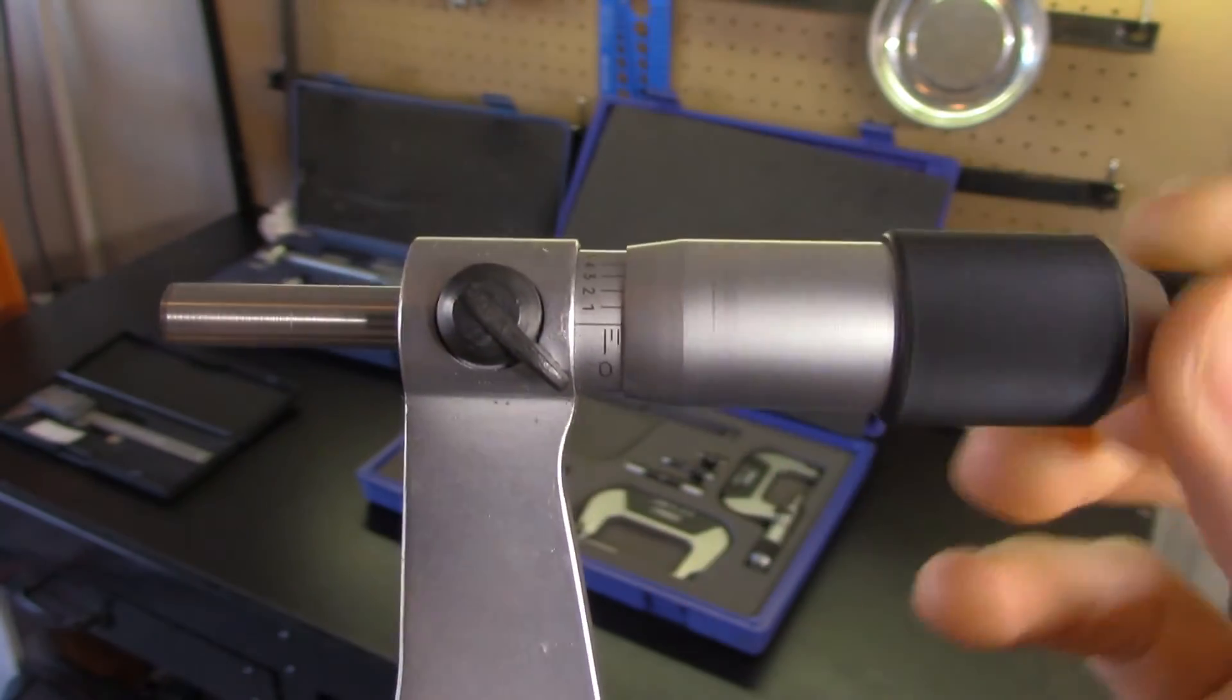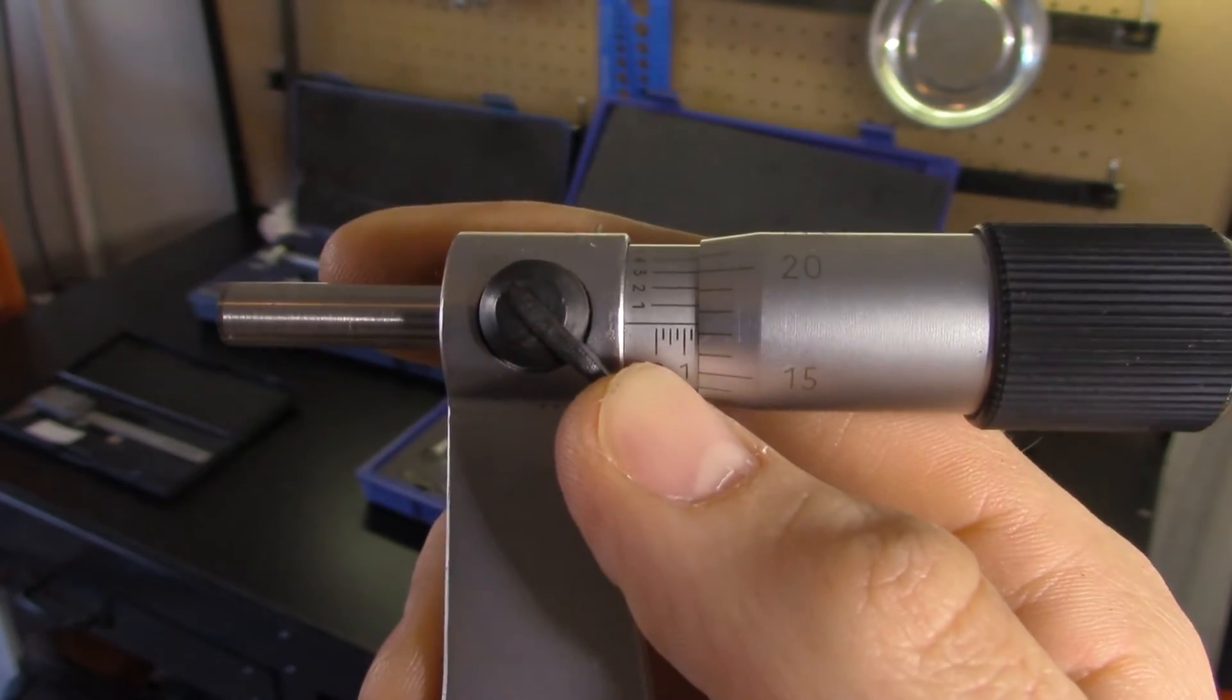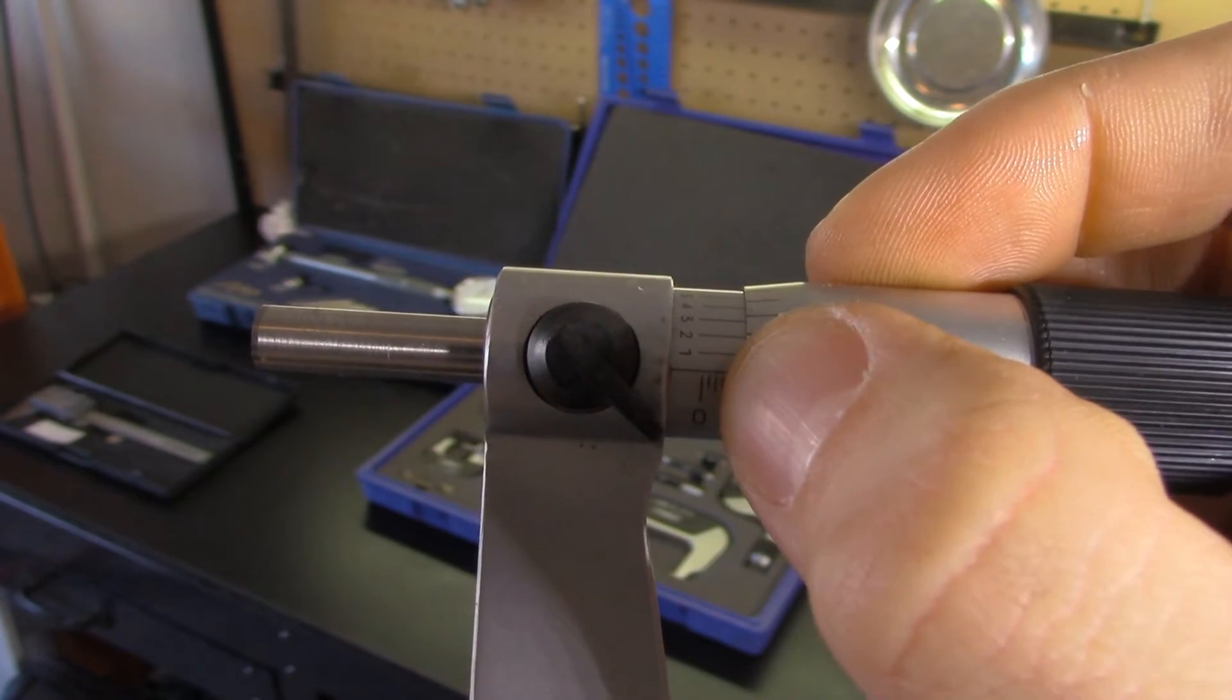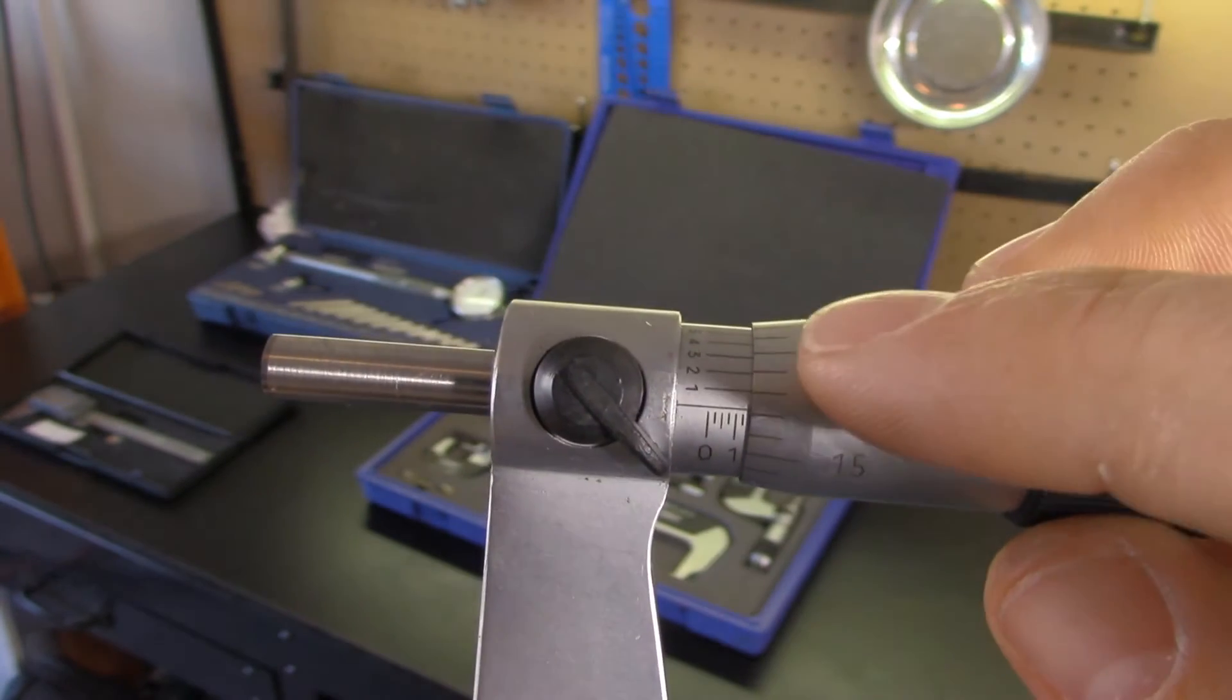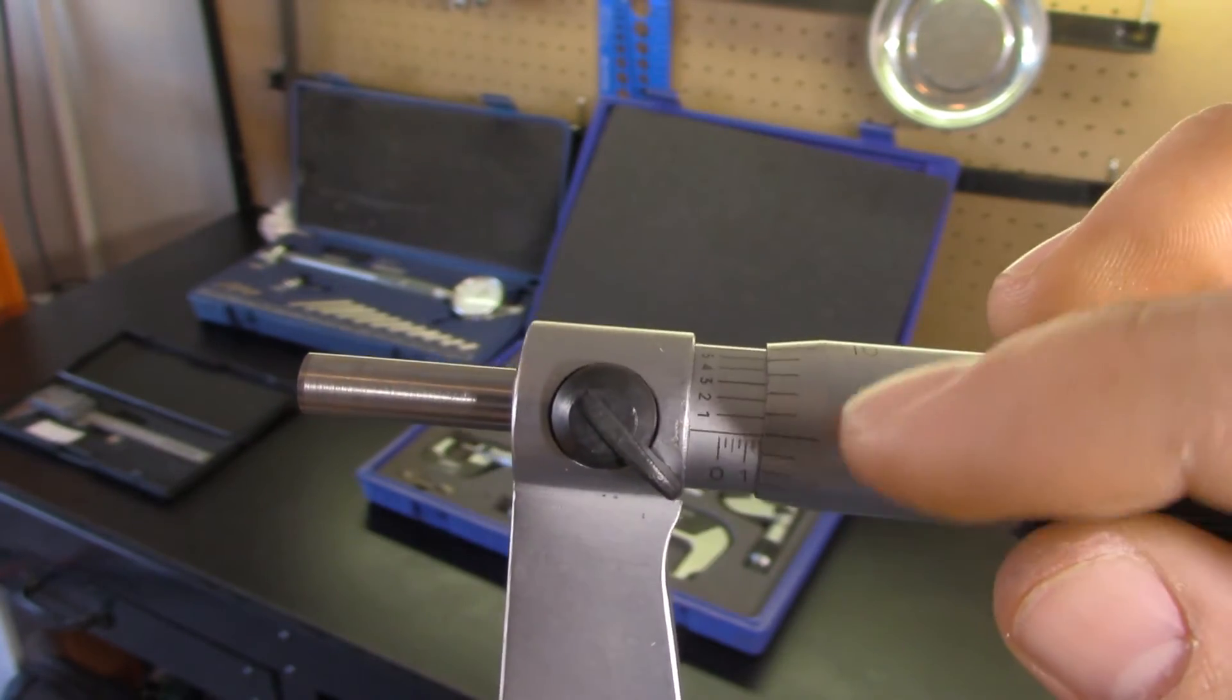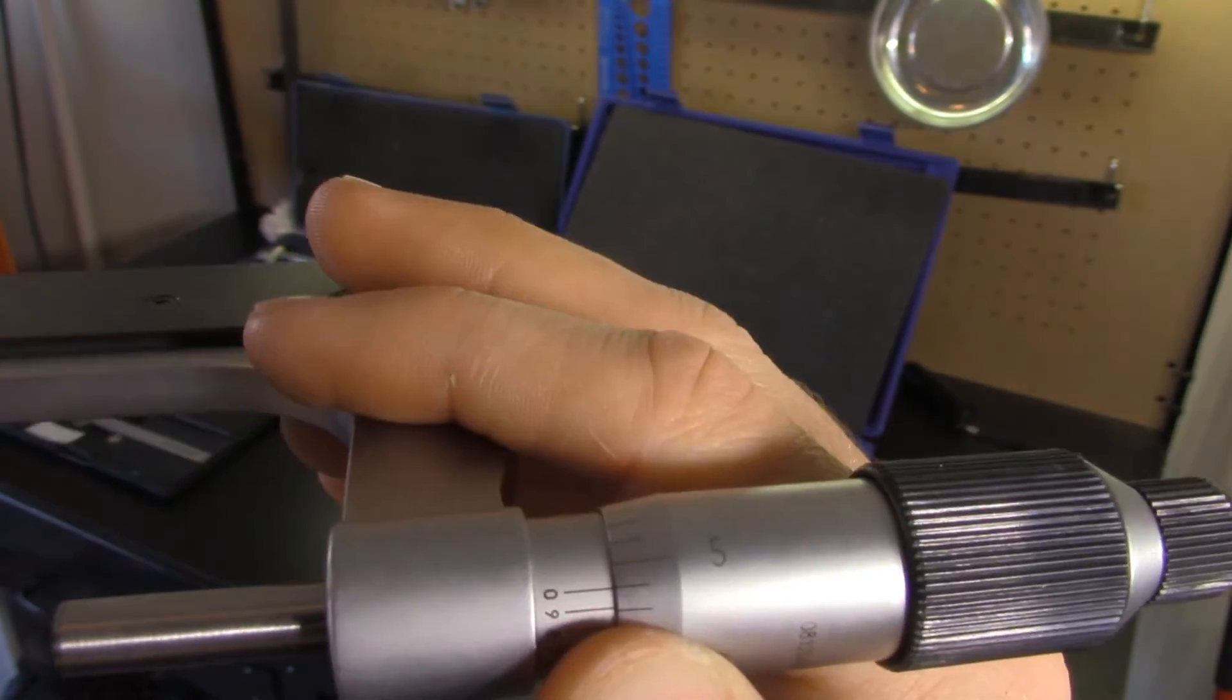Next we focus on the numbers across the bottom of the barrel. Each numbered line is a hundred thousandths, and each small tick between the numbered marks represents twenty-five thousandths. These numbers on the thimble are thousandths of an inch. The numbers that run up the barrel represent ten thousandths.